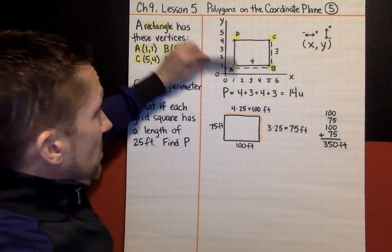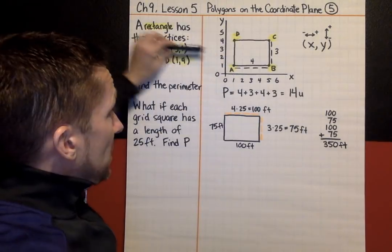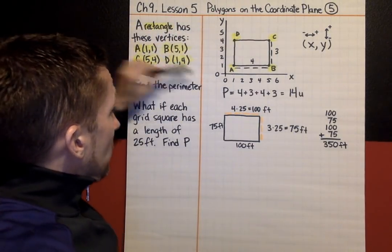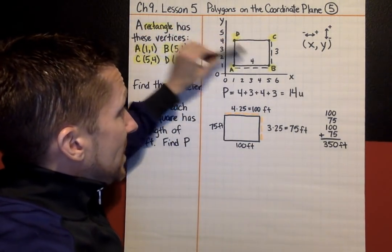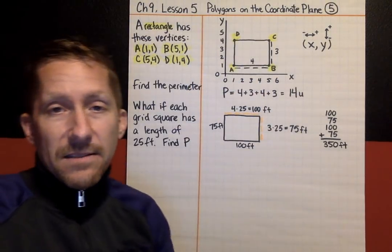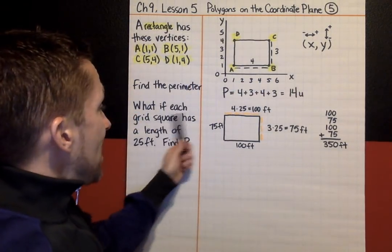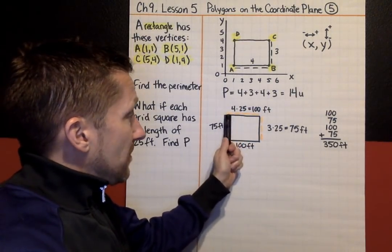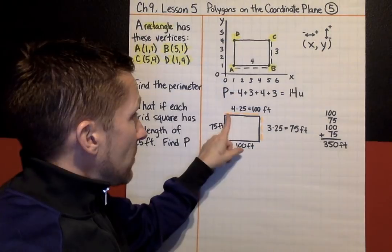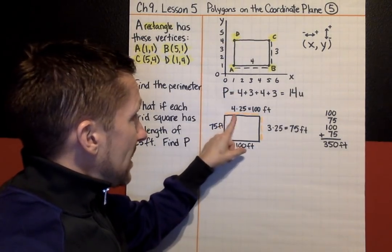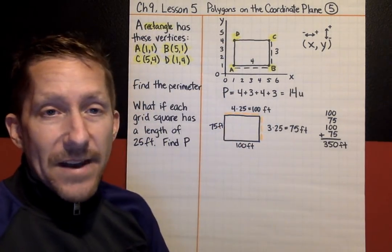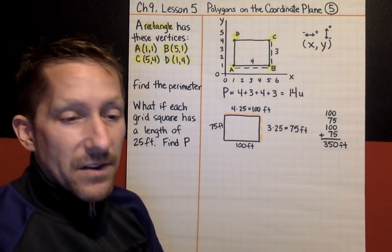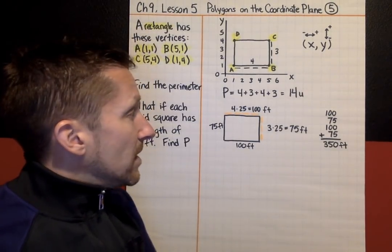So, again, part of your practice today will be plotting ordered pairs and creating a polygon and doing what it says, like finding the perimeter. And you might be changing the grid square to a different amount, like each grid square represents each side of the grid square is 25 feet or some other number.